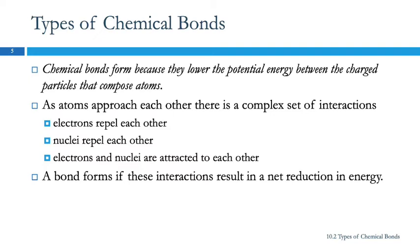There's a complicated set of interactions as two atoms approach each other. You've got repulsion between like charges — electrons and electrons, nuclei and nuclei — and then you've got attraction between the electrons and the nuclei.